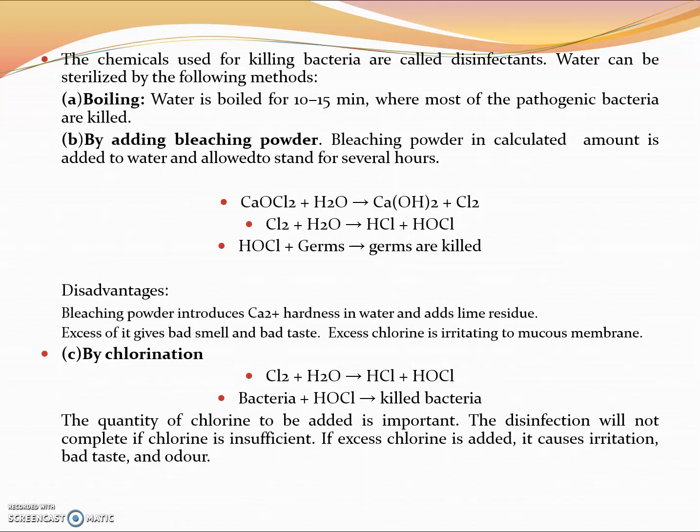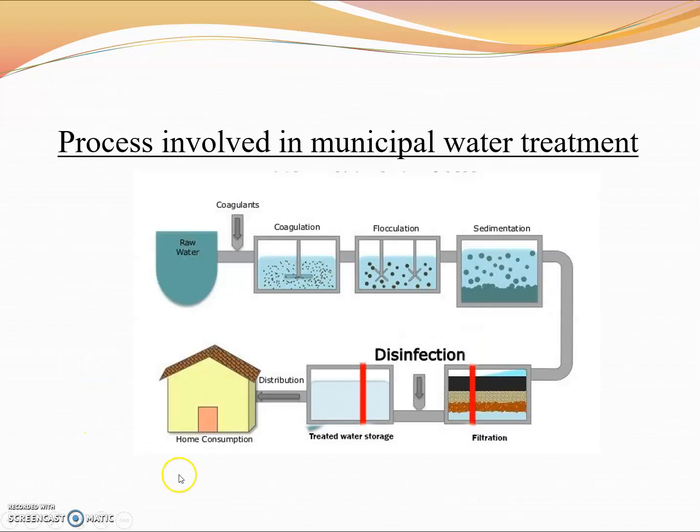After the disinfection process, the material is passed to the storage container. Storage usually takes place in an underground storage tank called a clearwell tank, and also in elevated storage tanks that are visible around town. There must always be an ample supply available in the event of emergencies. This can include power outages, fires, and floods.